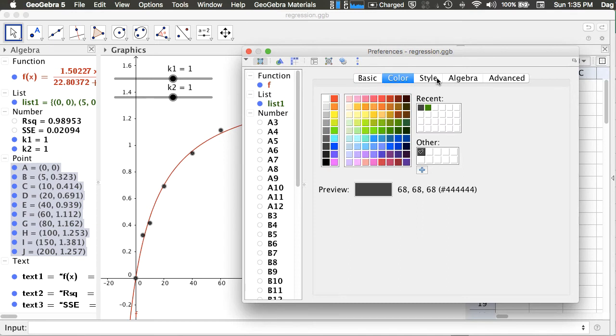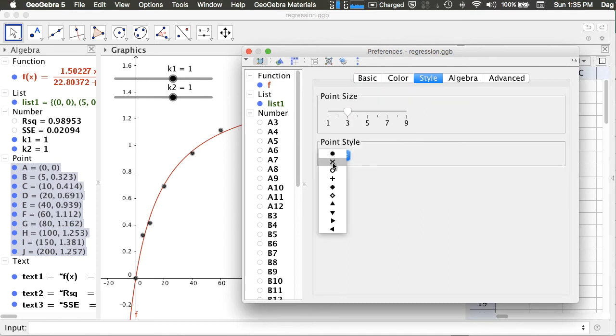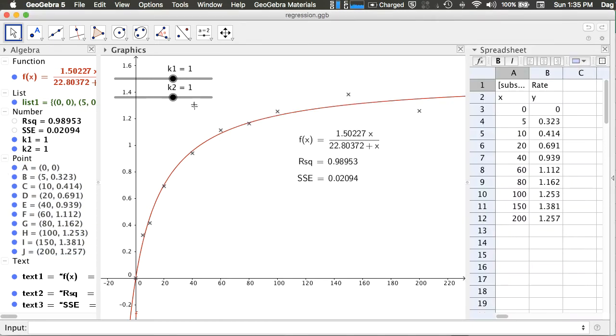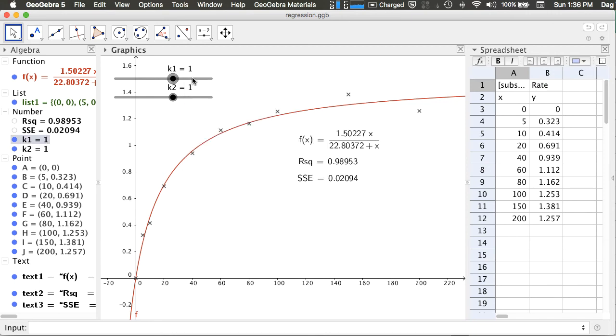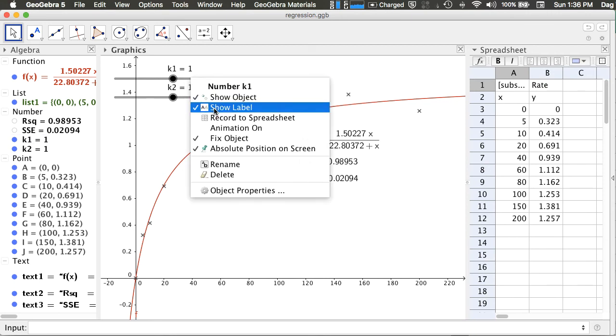You can also change the point style. I prefer using a cross. You can also see the sliders K1, K2 here. This is perhaps a bug in GeoGebra that the K1 is not equal to the K1 and K2 in the model. So you may want to hide them. To hide an object, you can right click on it. Uncheck show object.